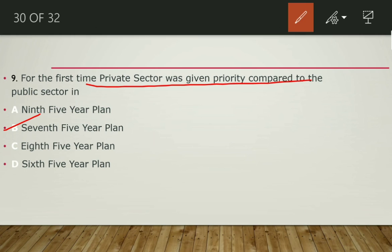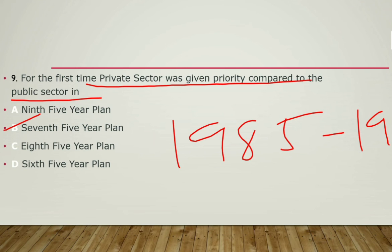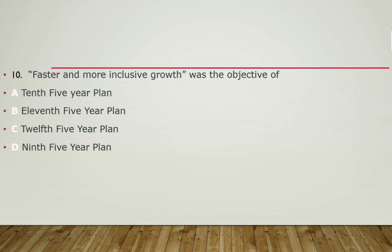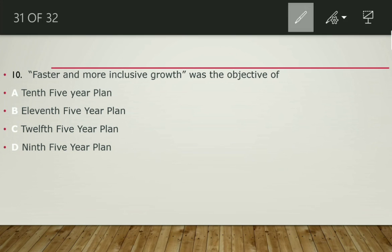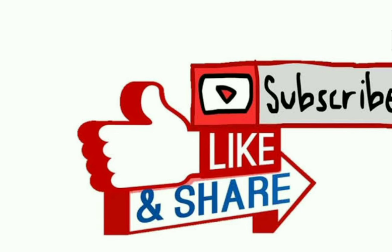The time period of the Seventh Five Year Plan was 1985 to 1990. Faster and more inclusive growth was the objective of the Eleventh Five Year Plan — this focus is important for examinations. Thank you very much for watching. Please like, share, and subscribe to the channel and never miss a video from Dare to Win Competition Classes.